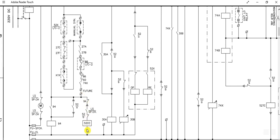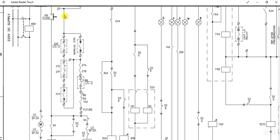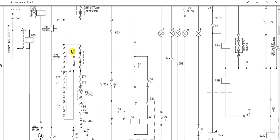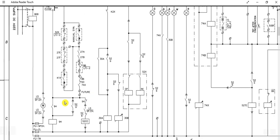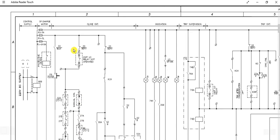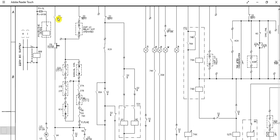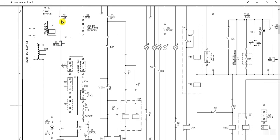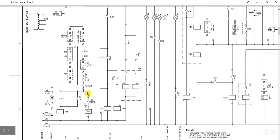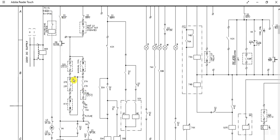There is also a parallel path — this is the manual synchronization path. If you synchronize by manual process, it will follow this path: service position, then this way, and it will energize the closing coil of the circuit breaker. There is also the test position — when the circuit breaker is in test position and you push the close push button, it will close this path. The push button contact will close and come through this way to energize the closing coil.